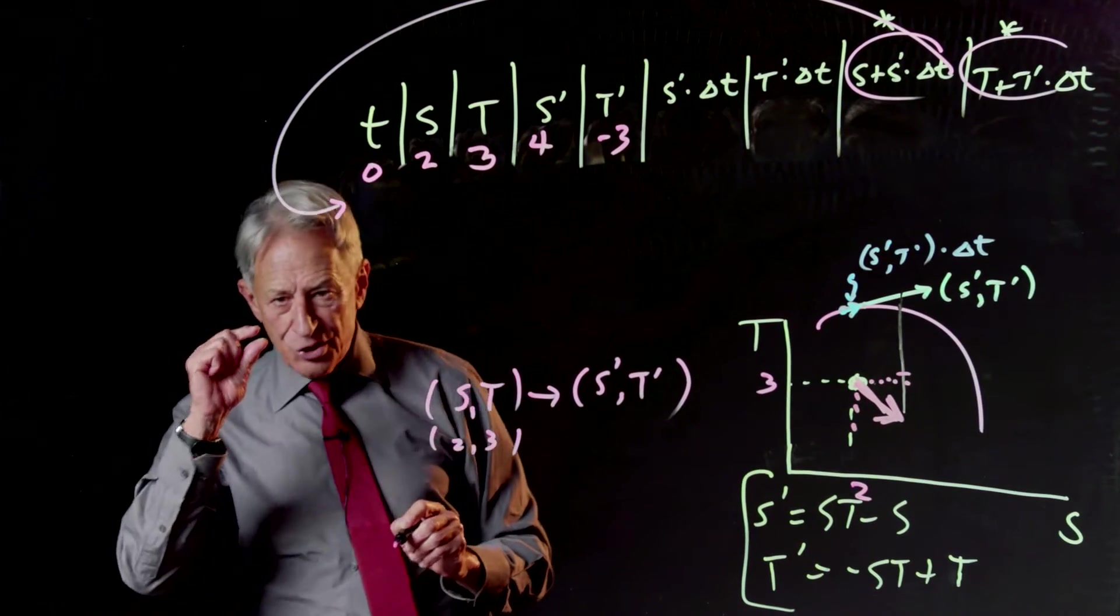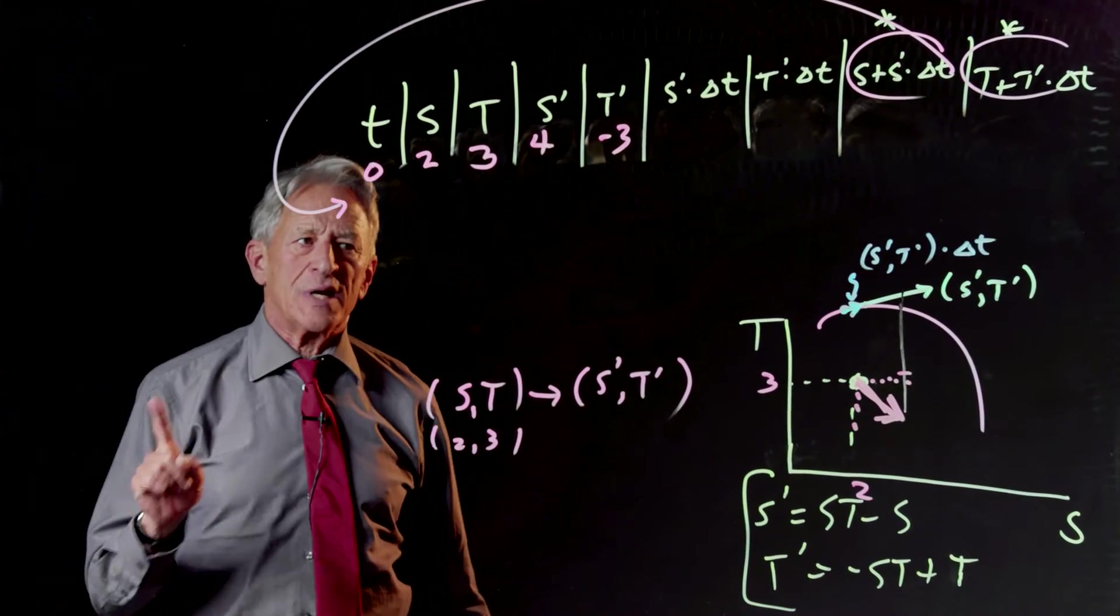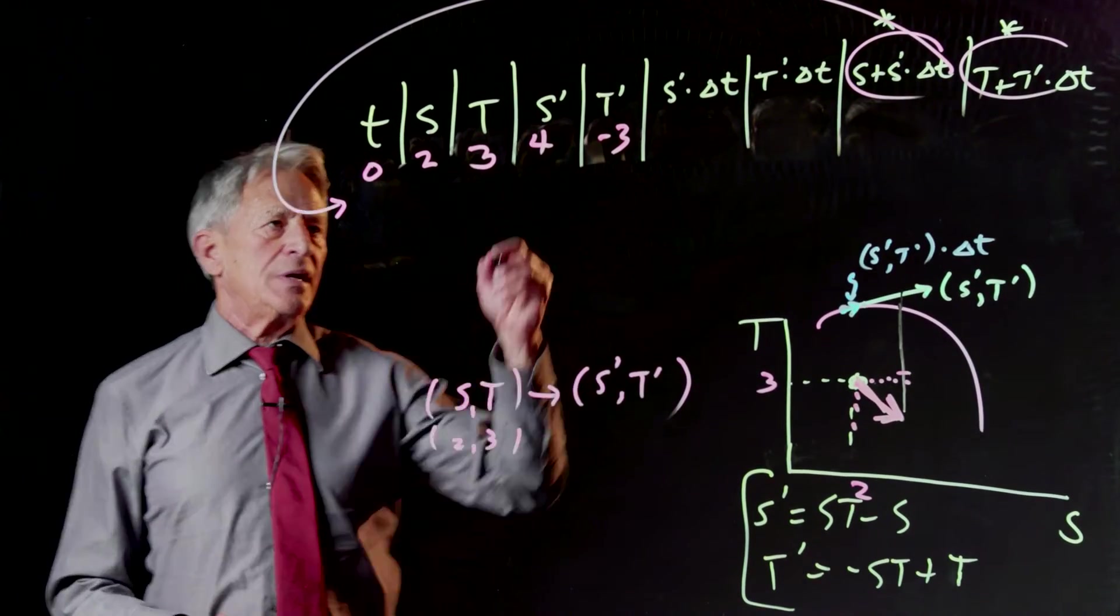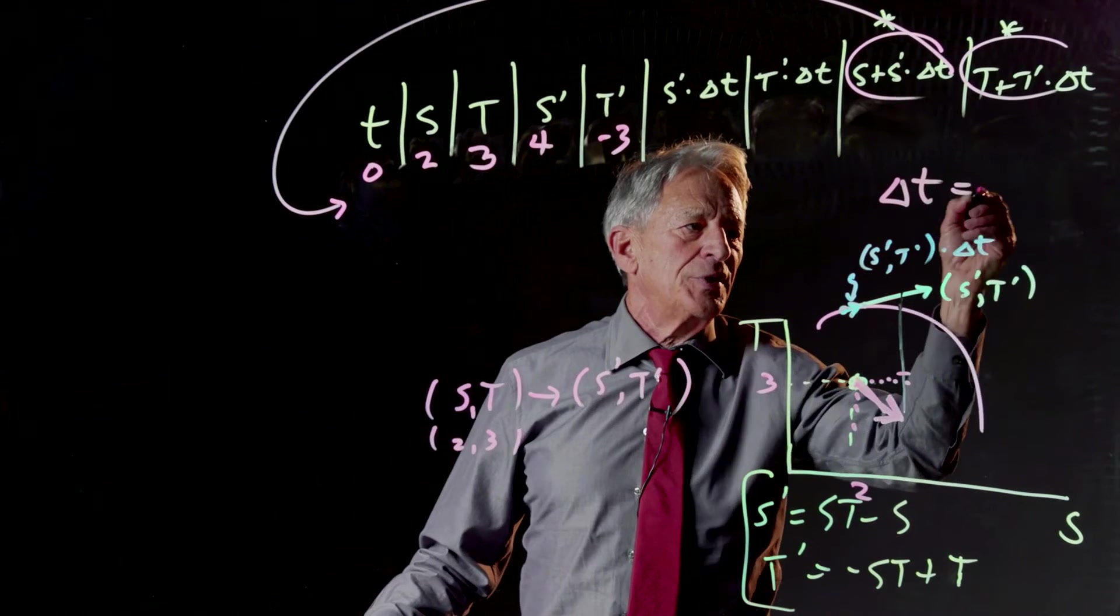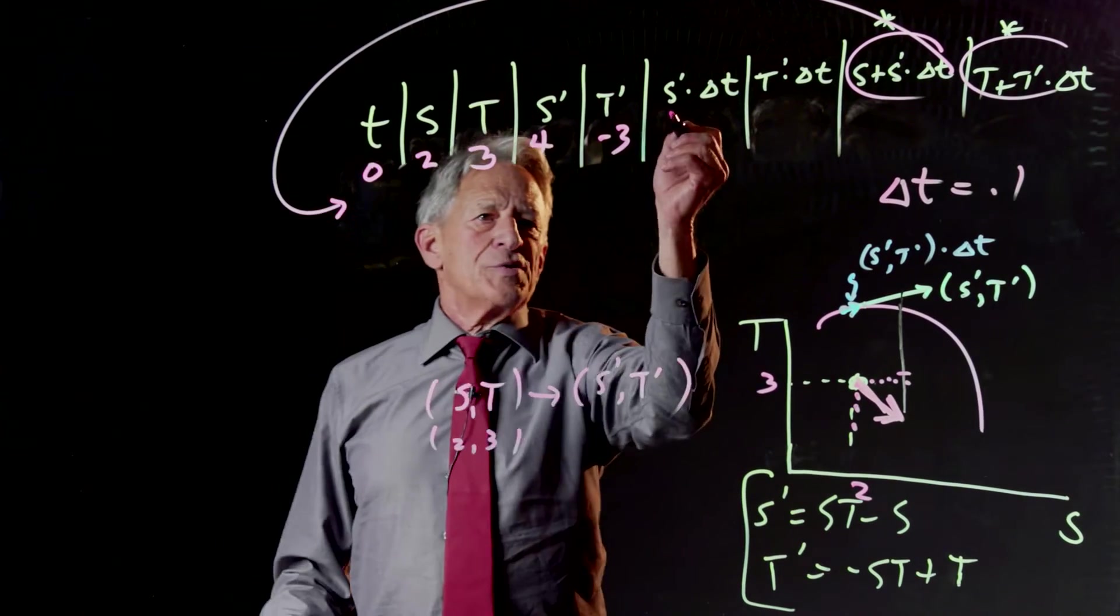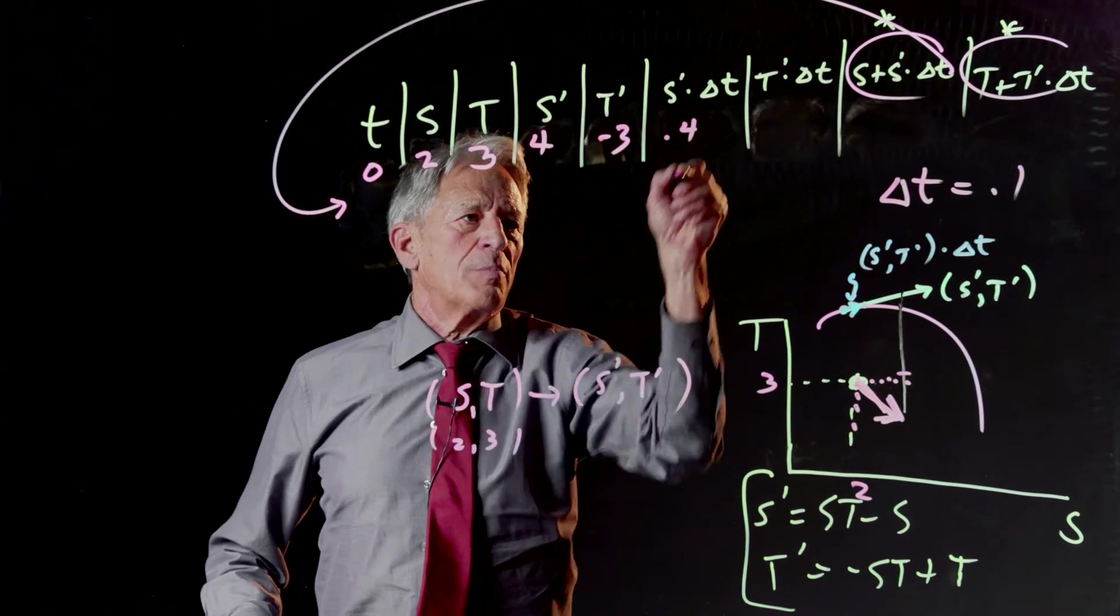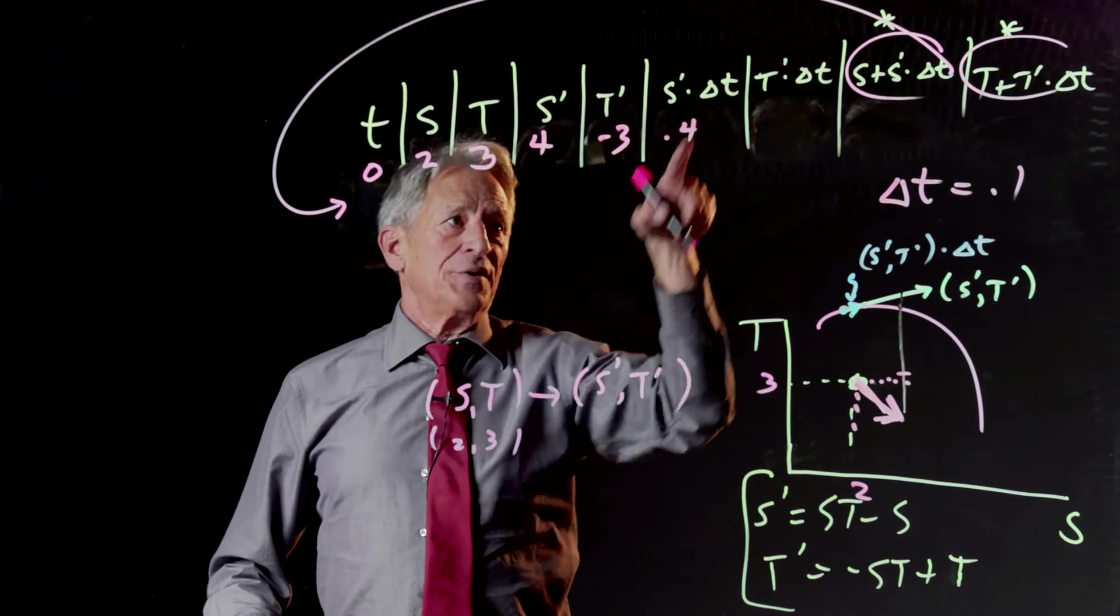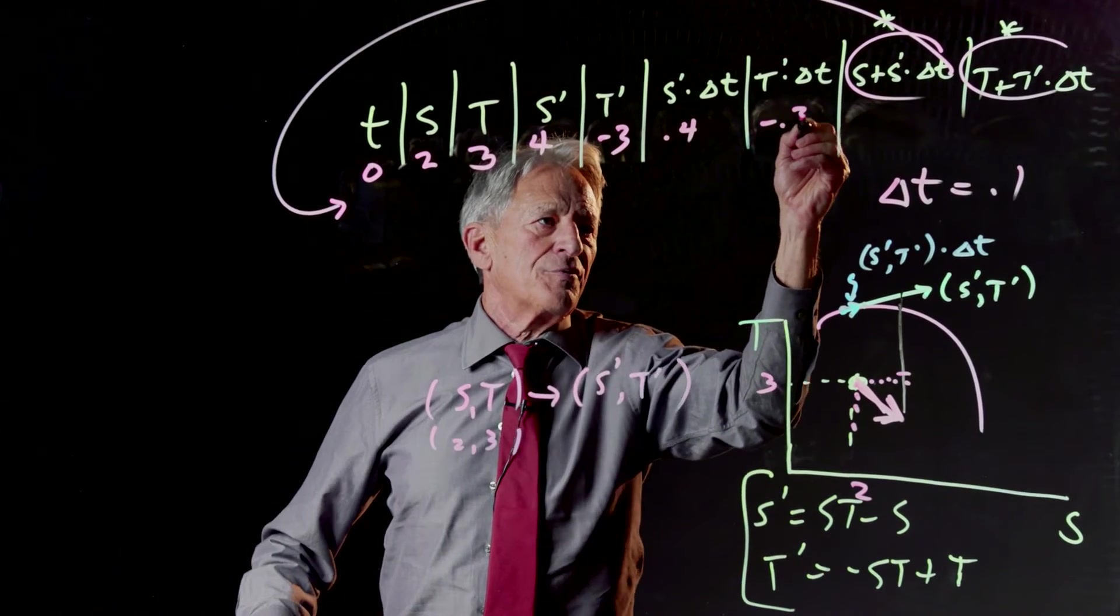But now we have to take a very short segment of that change vector. We don't want to follow that change vector for one whole time unit. We want to follow it for a very short time and that's delta t and we have to pick a delta t and I'm going to pick right here delta t equals 0.1. So now s prime times delta t is 4 times 0.1 or 0.4. t prime is minus 3 times delta t is minus 3 times 0.1 is minus 0.3.